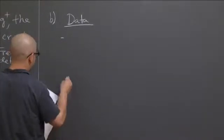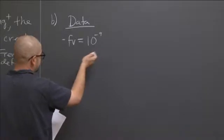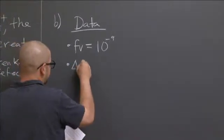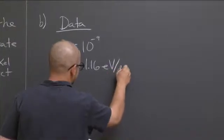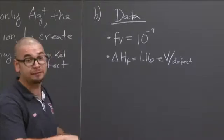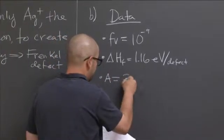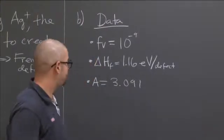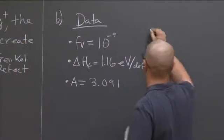The first thing is that our fraction of vacancies that are formed in silver bromide is one part per billion. So 10 to the minus 9. The second thing that we're given in the problem is that our energy of formation, our enthalpy energy, is 1.16 electron volts per defect. This is the energy penalty for every time one of your silver cations jumps out of sight to create that. We're also given the fact that A, the entropic prefactor, is 3.091 with no units.